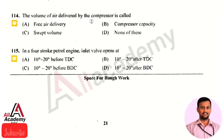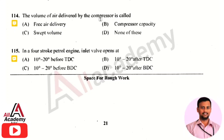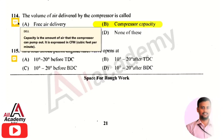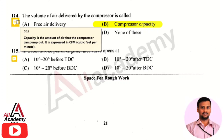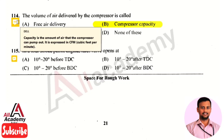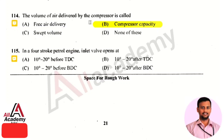The volume of air delivered by a compressor is called the compressor capacity. Compressor capacity is the amount of air that the compressor can pump out, and it is expressed in CFM — cubic feet per minute.